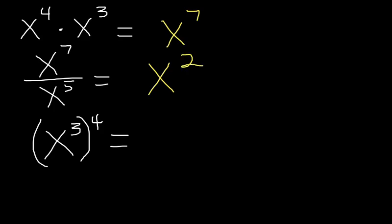And then a third rule that kind of goes along with that is, if we have a base like x to the third power in this case, and that power is raised to another power, then we multiply together the exponents. So x to the 12th, in this case, by multiplying together 3 times 4 here.